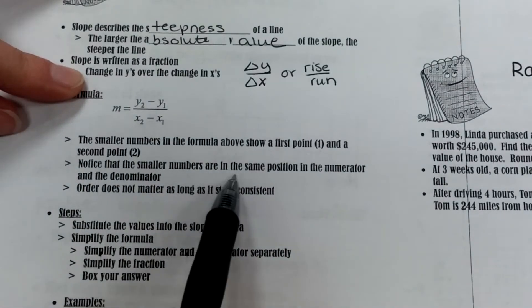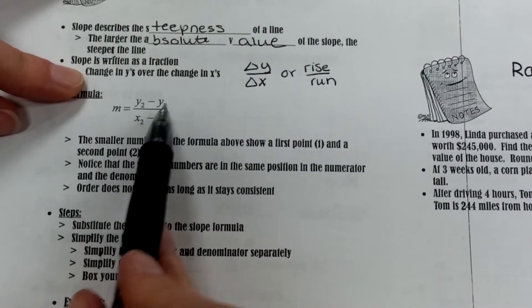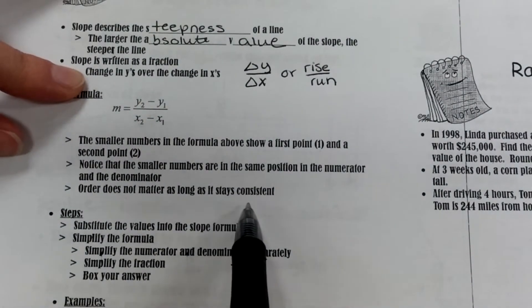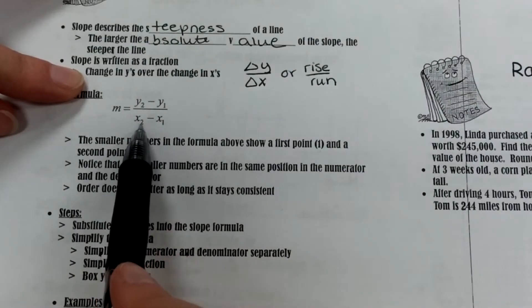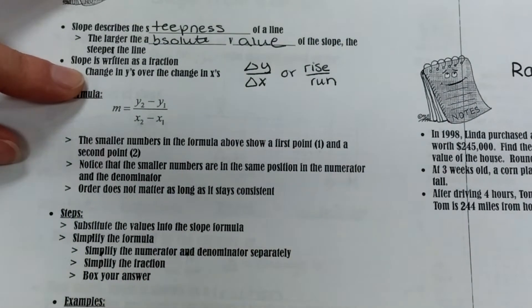Notice that the smaller numbers are in the same position in the numerator and the denominator, so here we have both 2's, here we have both 1's. Order doesn't matter as long as it stays consistent, so you can pick whichever point you want to represent y2 and x2, and whichever point you want to represent y1 and x1, as long as you stay consistent.